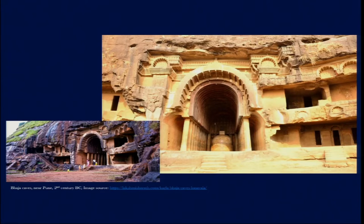However, we also find a contradiction in this basic idea. On one hand, Buddha advocated for simplistic means of living and simplistic ways of building structures. On the other hand, when we see the scale of structures like the Bhaja Caves and the Karla Caves, the size, scale, precision, and details do not really seem simplistic at all but are done with much greater care.